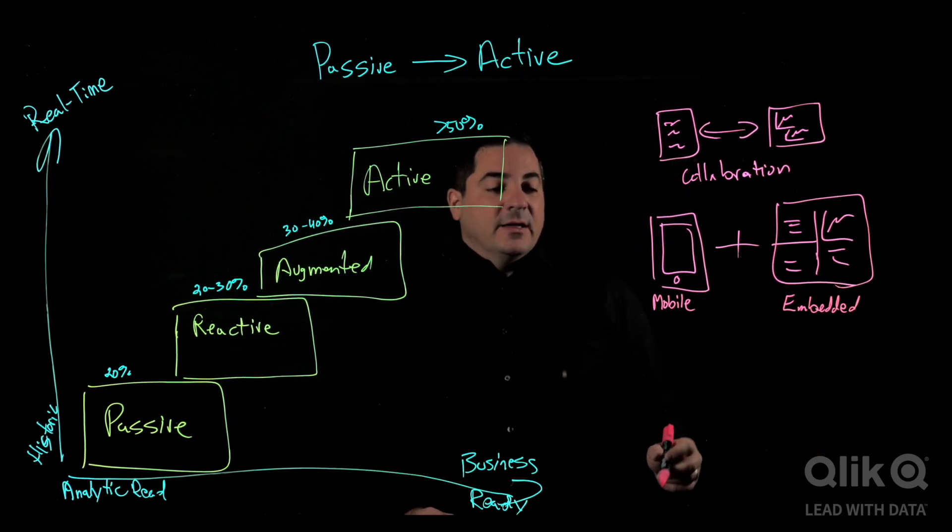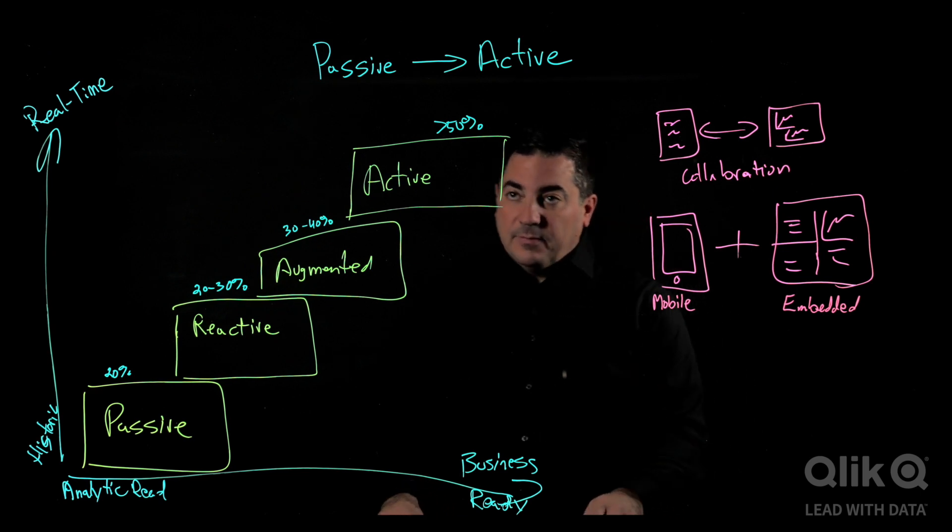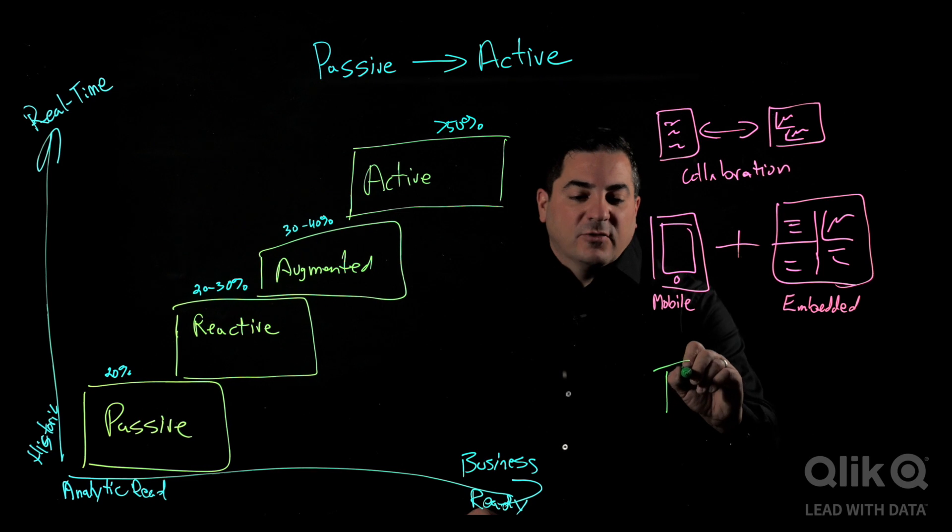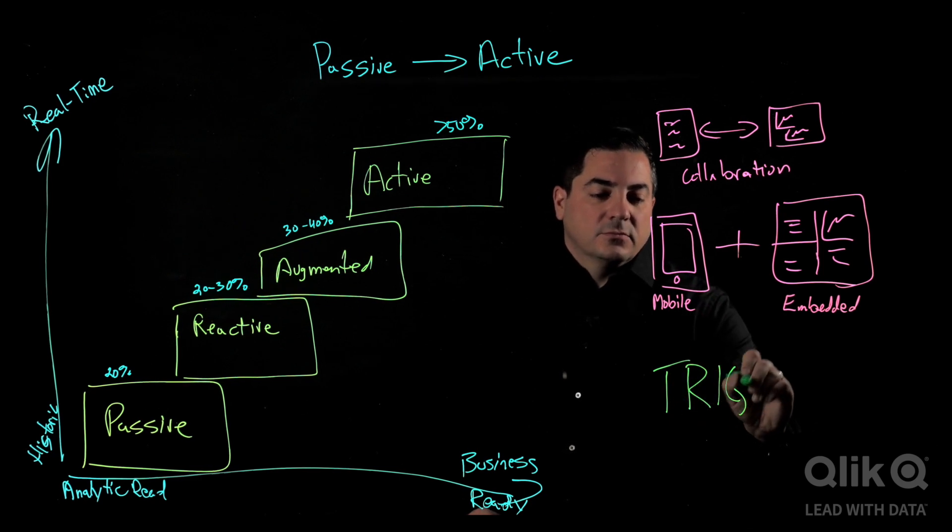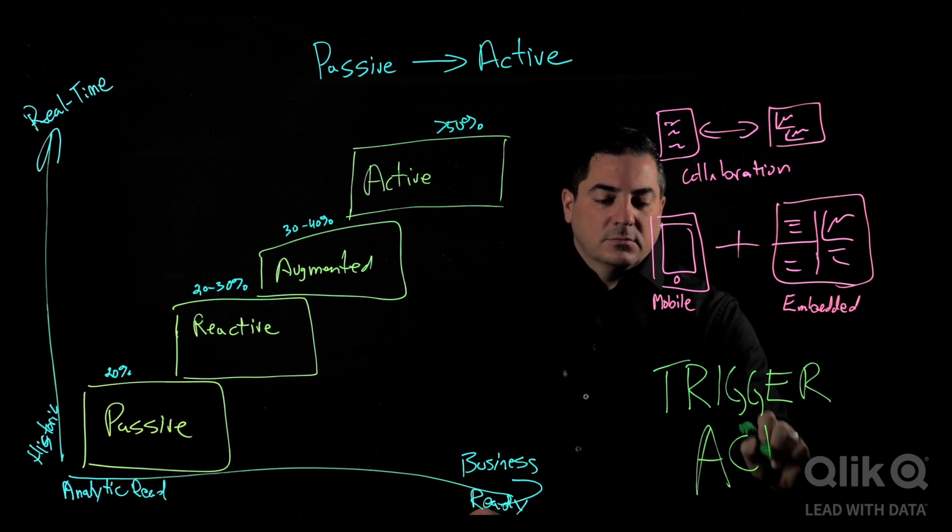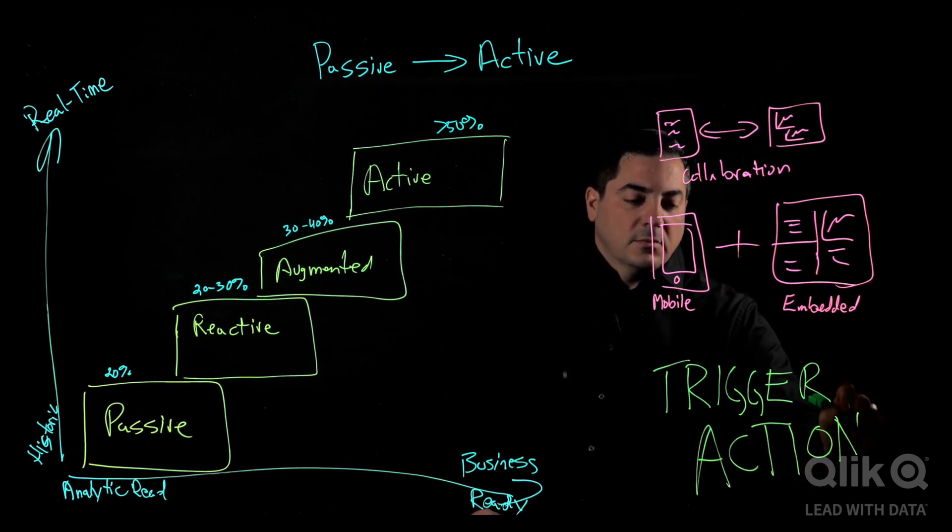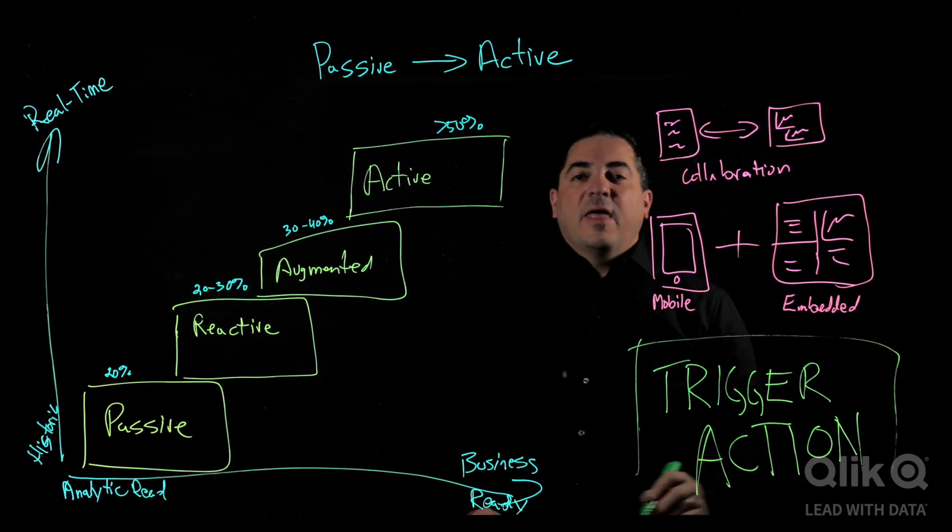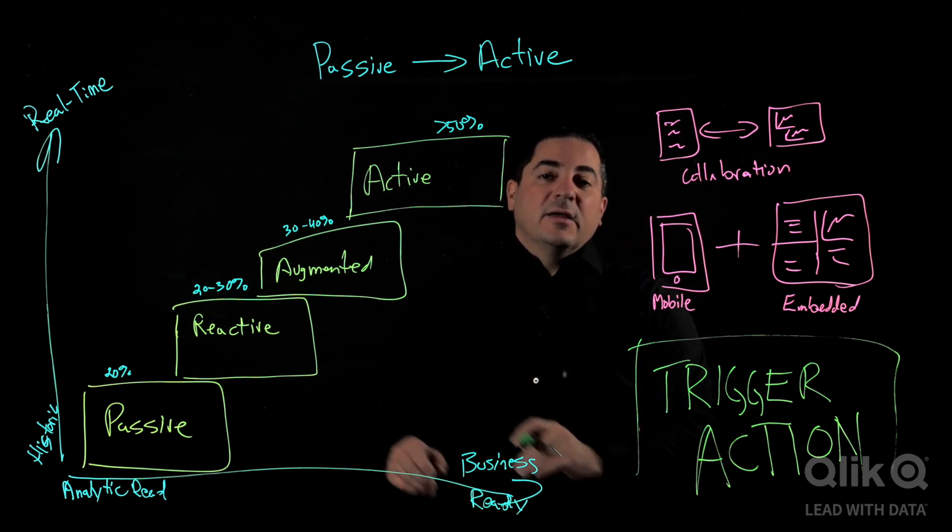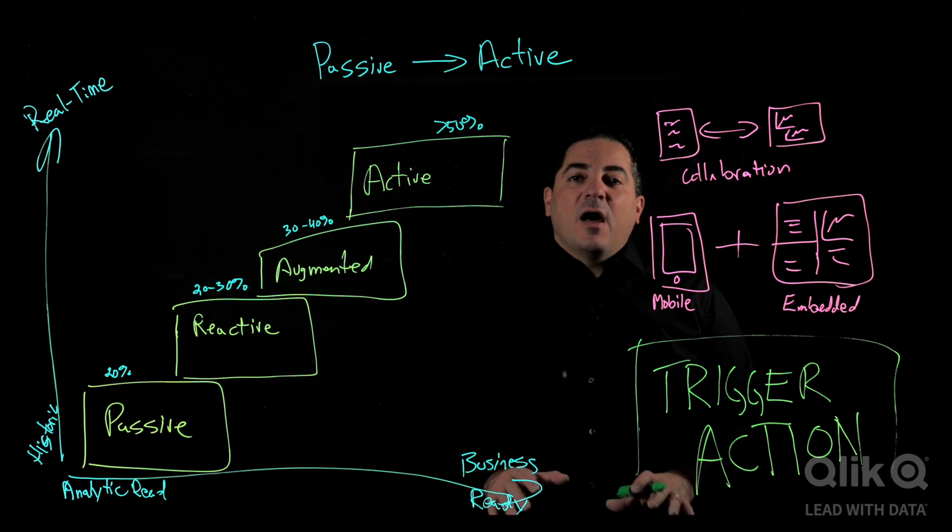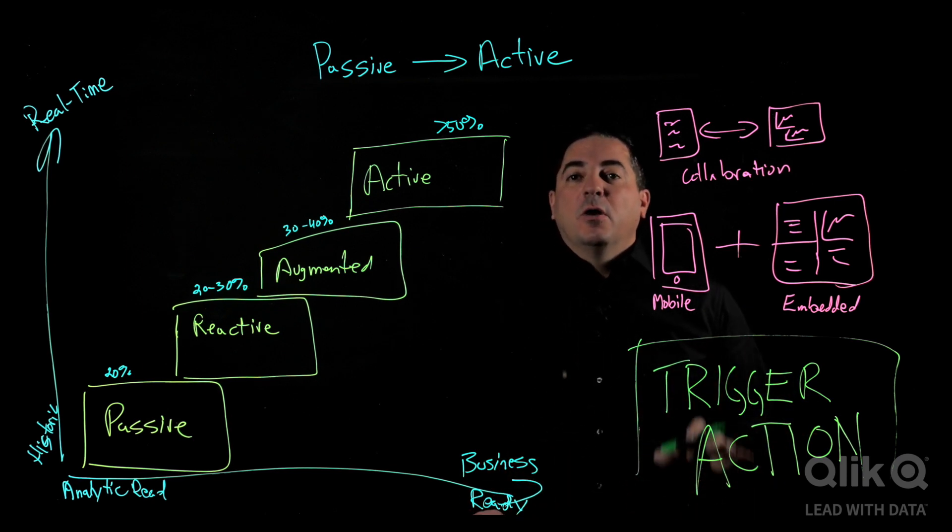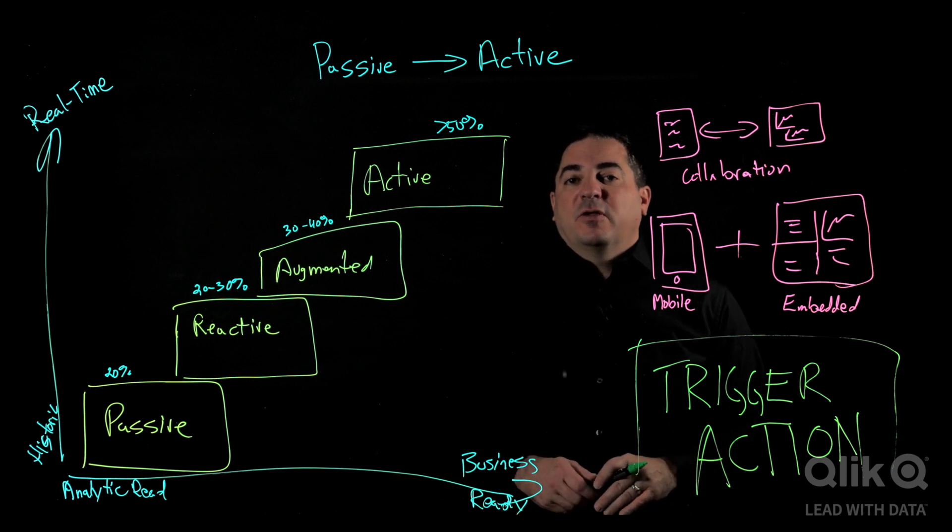And finally, and most importantly, active analytics needs to trigger action. That's done in two key ways. One is automating things, and the other is alerting individuals of what they need to do and prescribing the approach they need to take.